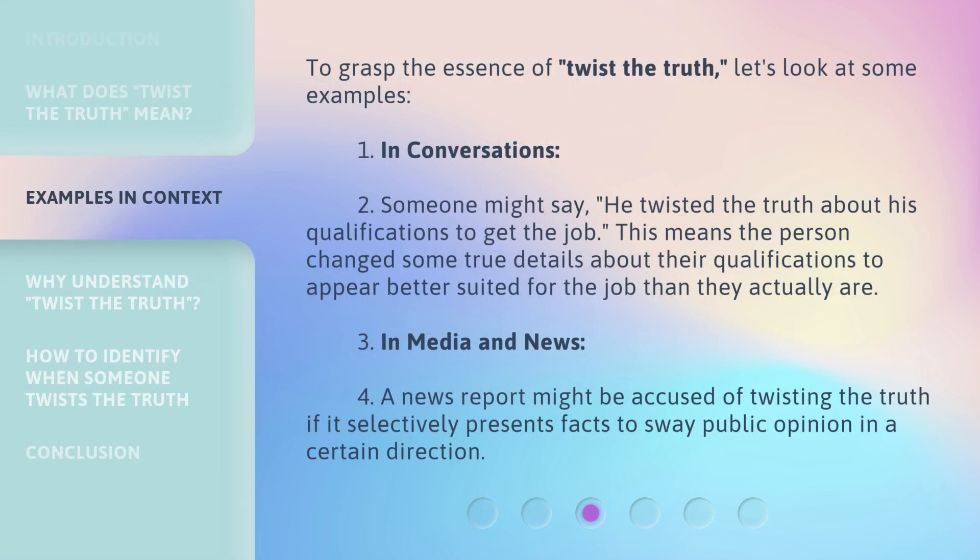To grasp the essence of 'twist the truth,' let's look at some examples. In conversations, someone might say, 'He twisted the truth about his qualifications to get the job.' This means the person changed some true details about their qualifications to appear better suited for the job than they actually are. In media and news, a news report might be accused of twisting the truth if it selectively presents facts to sway public opinion in a certain direction.